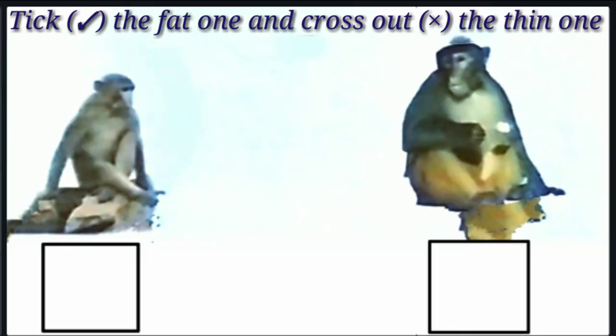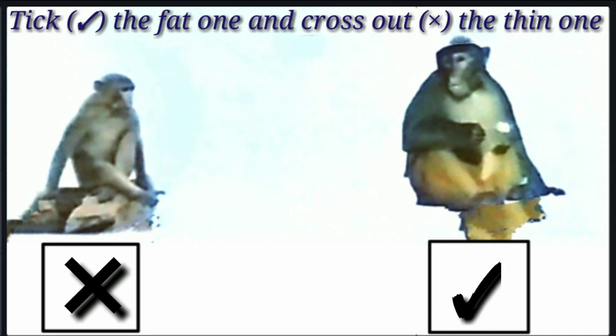Here are two monkeys. The first is a thin monkey and the second is a fat monkey. So we will cross out the thin monkey and take the fat monkey. Kids, I hope you understand fat and thin. Thank you for watching.